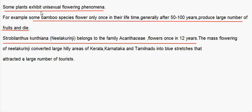Some plants exhibit a unisexual flowering phenomenon. Unisexual means the flower contains only one type of reproductive organ, either the male part or the female part. For example, some bamboo species flower only once in their lifetime — generally after 50 to 100 years — then produce a large number of fruits and die.